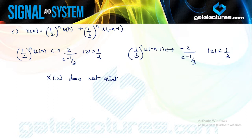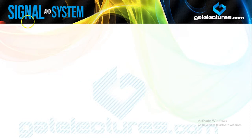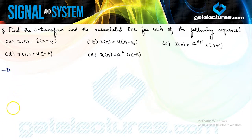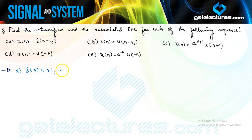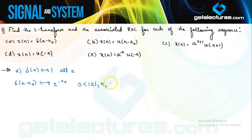Now we look at the next question, solving it using properties of the Z-transform. We know Z-transform of δ(n) is 1 with ROC being all z. Applying the time-shifting property, the Z-transform of δ(n−n₀) is z^{−n₀}, with ROC |z|>0 if n₀>0, and |z|<∞ if n₀<0. Also, since we know the Z-transform of u(n) is z/(z−1) with ROC |z|>1, applying time-shifting gives the Z-transform of u(n−n₀) as z^{−n₀}·z/(z−1) = z^{−n₀+1}/(z−1), with ROC |z|>1 and |z|<∞.